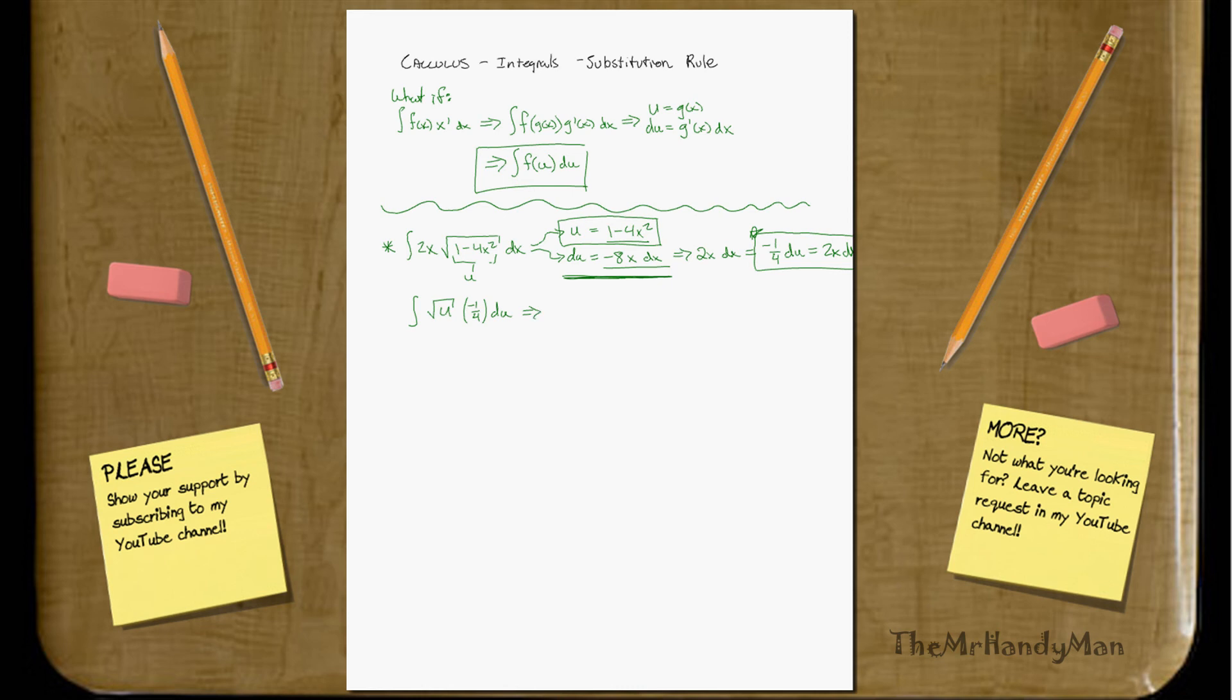Now, everything's looking really simple, because then you're going, okay, well, now I know how to solve this. You pull the negative 1 fourth out, and you take the integral of u to the 1 half power du, which, working through the math, you get u to the 3 over 2, divided by 3 over 2, which, once again, working out the math, you're going to get a total of negative 1 over 6, u to the 3 over 2.